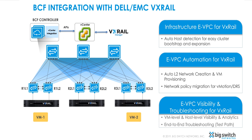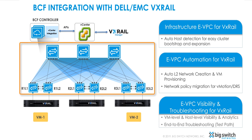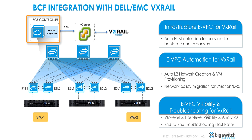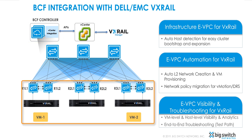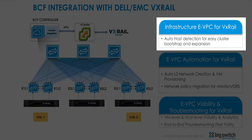For the demo topology, we have a three-rack Big Cloud Fabric setup controlled by the Big Cloud Fabric controller. We have VxRail nodes attached to each rack and workload VMs running on VxRail nodes that we will use in this demo. First, let's see how the VxRail infrastructure eVPC helps with the cluster formation.